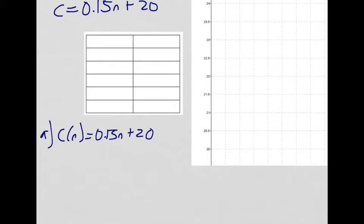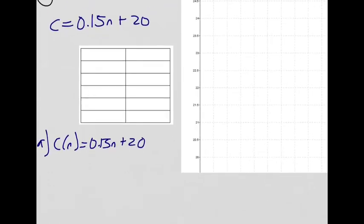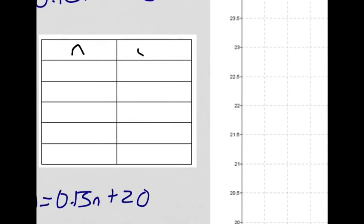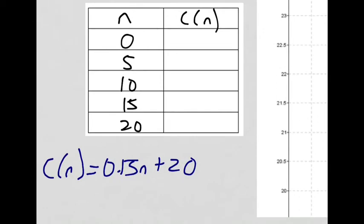In part B, they ask us to make a table of values and then graph the function. This guy sends up to four additional text messages. I'm going to do it for up to 20 text messages because nobody really sends four text messages in a month. I'm going to go from zero text messages and then go up by increments of five to around 20 messages. I'm going to make the left-hand column N, that's always the independent variable, and C of N, the dependent variable, always goes on the right. So we start at zero and then we go to five, ten, fifteen, and twenty.